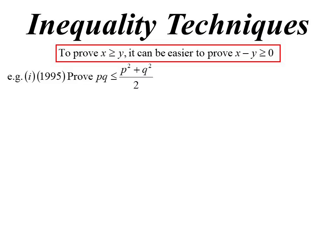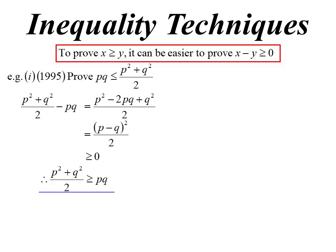Starting with this example — prove that PQ is less than or equal to (P squared plus Q squared) over 2. I'm going to pull everything to one side and show that (P squared plus Q squared)/2 minus PQ is greater than or equal to zero. Creating an algebraic fraction, the top comes out as a perfect square, and we know squares are always positive. I've written it in reverse to what they asked, but it's the same thing — that's probably the quickest way.